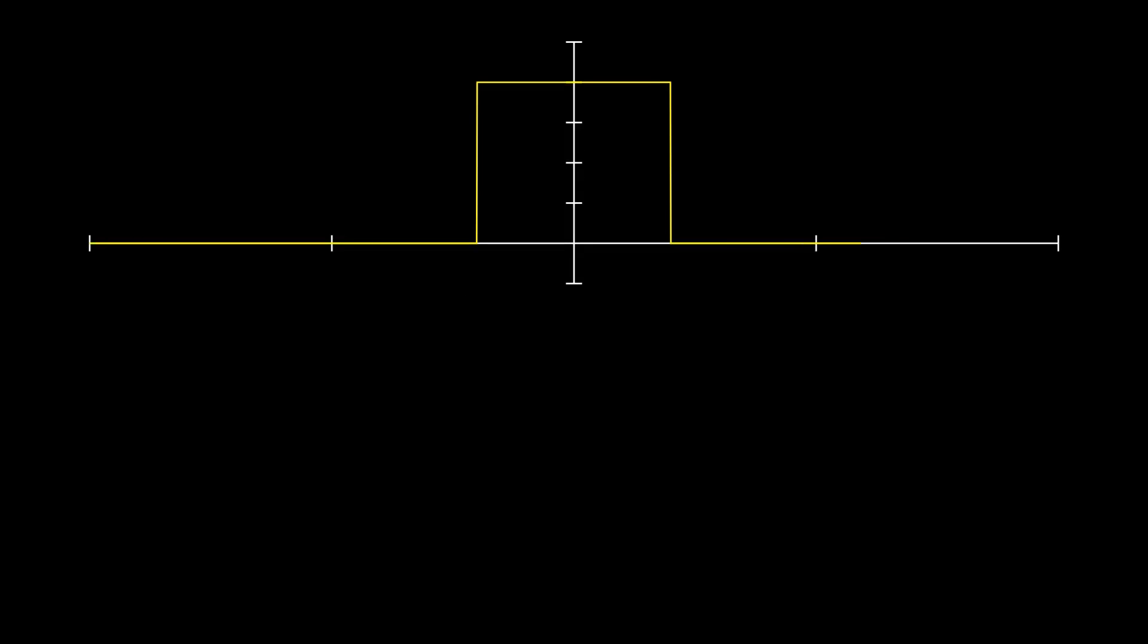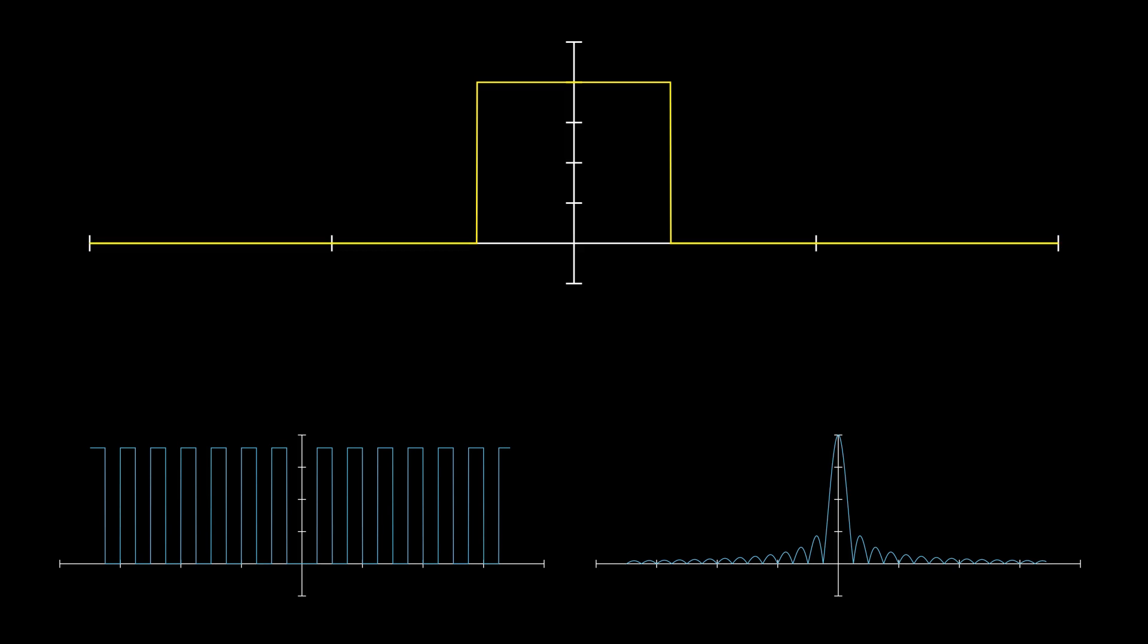From that example, we clearly see that the Fourier transform of a rectangular pulse is a sinc function. So the rectangular pulse and the sinc function form a Fourier transform pair. Meaning that the inverse Fourier transform of the sinc function leads to a rectangular pulse.